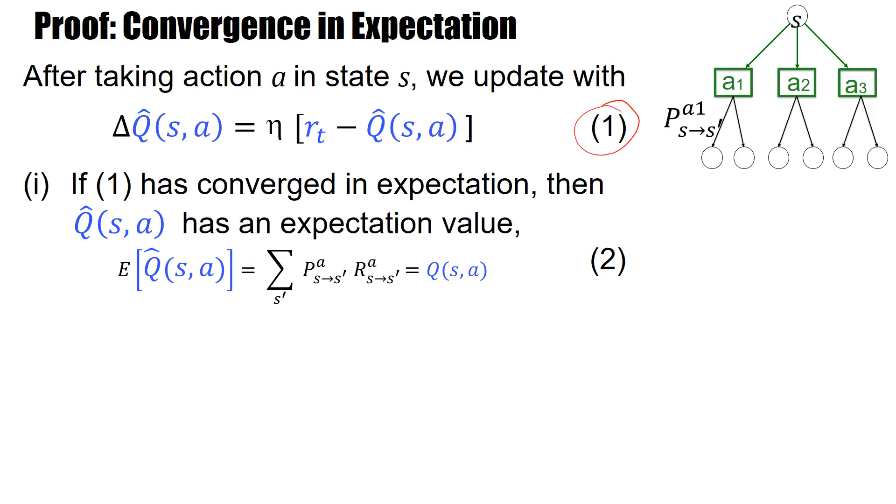And now let's look at the theorem. If this learning rule 1 has converged in expectation, then q has an expectation value which is the desired one.